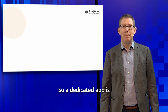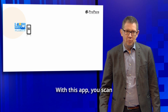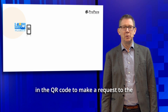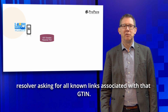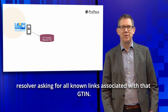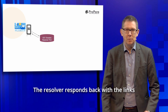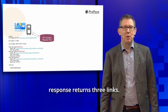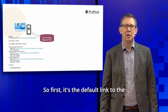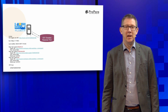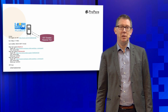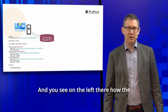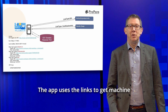A dedicated app is installed on a smartphone. With this app you scan a QR code on the product, and when scanning it uses the link in the QR code to make a request to the resolver asking for all known links associated with that GTIN. The resolver responds back with the links it has, indicating the link type for each link. In our demo, this response returns three links: the default link to the human-readable default page, a link to machine-readable certification information, and a link to machine-readable product information.